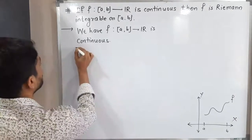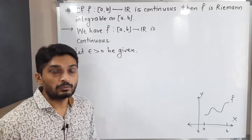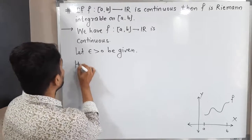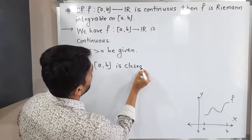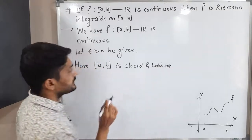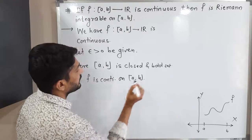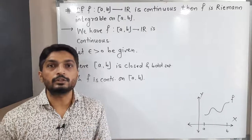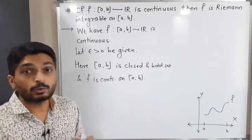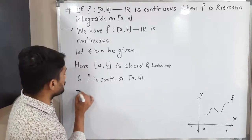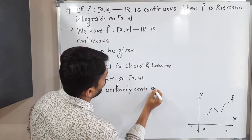Let epsilon greater than 0 be given. We have the closed interval [a, b], which is a closed and bounded set. Since f is continuous on the closed interval [a, b], and we know that any continuous function on a closed and bounded set is 100% uniformly continuous, therefore f is also uniformly continuous on [a, b].